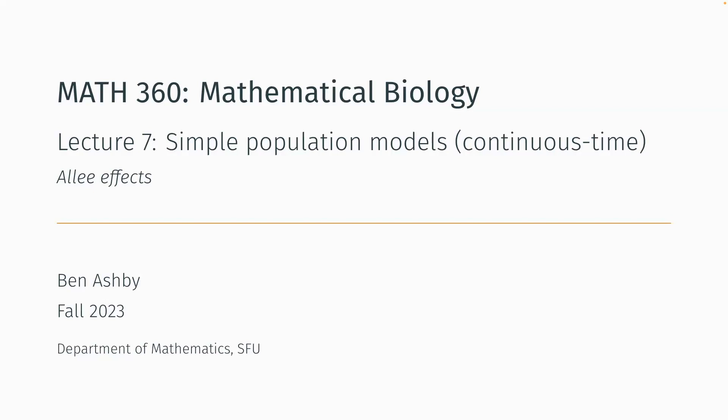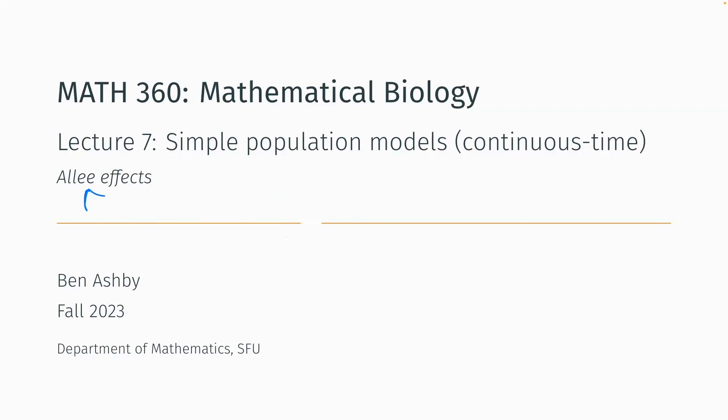Not to be confused with allele, which is a variant at a genetic locus. Sometimes people confuse Allee and allele when they're doing mathematical biology. One is about genetics — that's allele. This Allee effect with a capital A is about population dynamics.